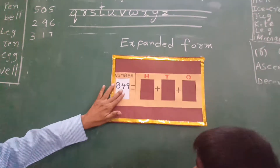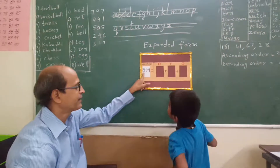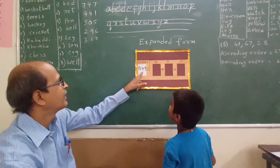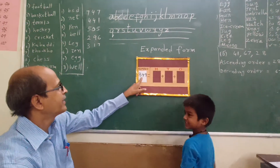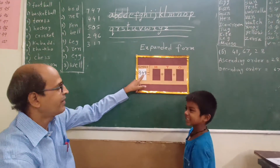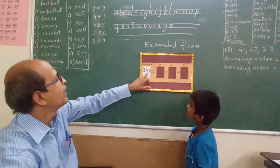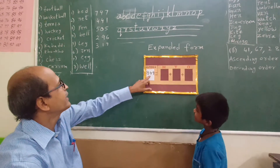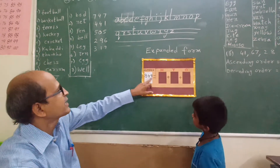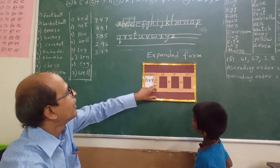Read this number. 849. Very good. Now we have to write this 849 in expanded form.